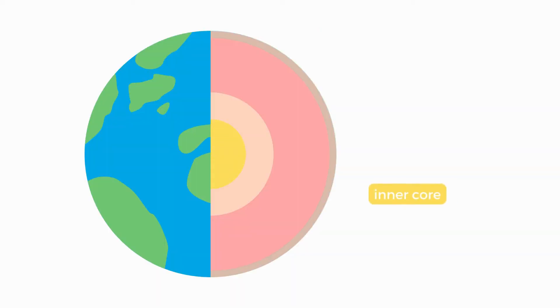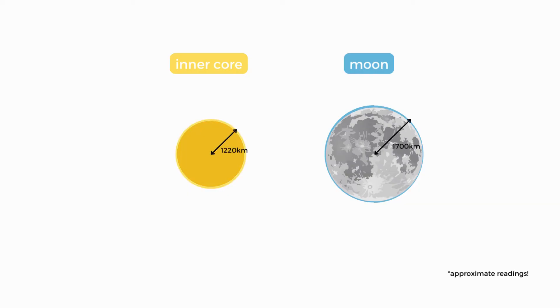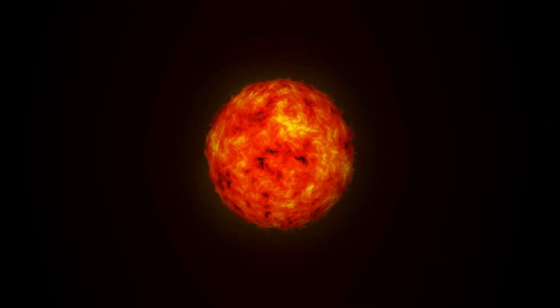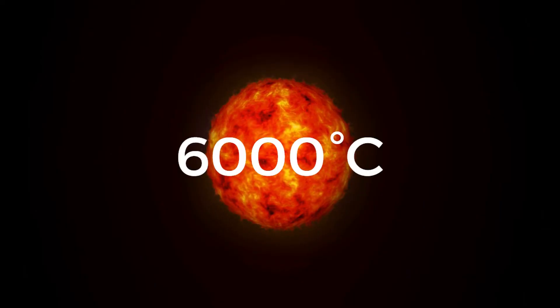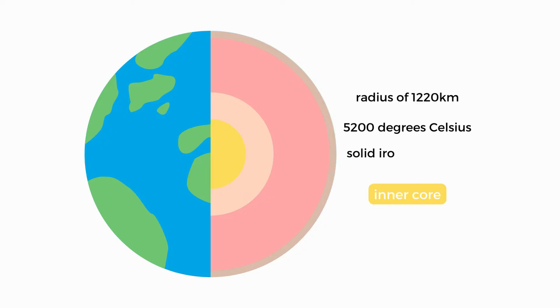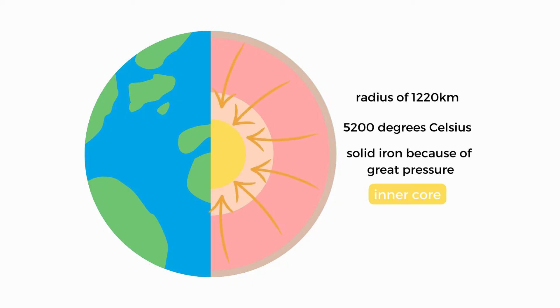Now for the inner core — it has a radius of 1,220 kilometres, which is slightly smaller than our Moon. The inner core reaches temperatures of about 5,200 degrees Celsius. To put that into perspective, the surface of the Sun has a temperature of about 6,000 degrees Celsius. Our core is incredibly hot. Even with all these high temperatures, the inner core is a solid because of the high pressure it experiences from its surrounding layers.